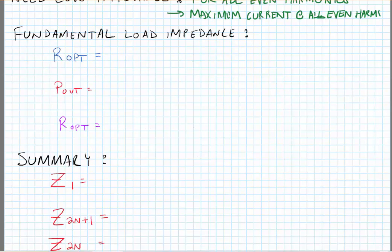We already found the relationship of the fundamental voltage and current, so we can find the optimum termination resistance for the class F amplifier. From this, we can find the output power.